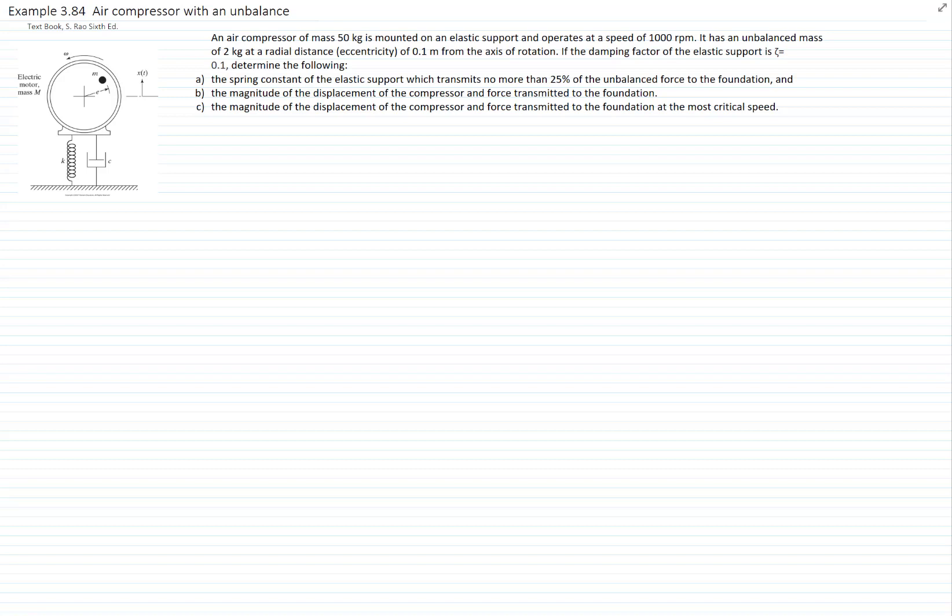This is example 384 from the book RAU, and this is air compression with an unbalance. We have the air compressor mass of 50 kilograms, mounted on an elastic support, operating at a speed of 1000 RPM. It has an unbalanced mass of 2 kilograms at a radial distance or eccentricity of 0.1 meters from the axis of rotation. The damping factor of the elastic support is zeta equals 0.1. Determine the following.